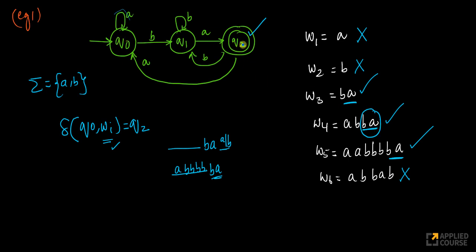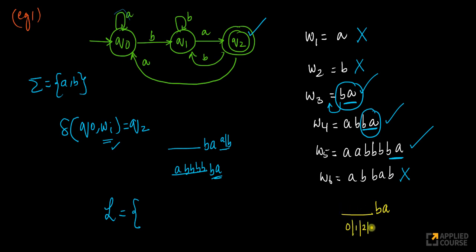For any other ending of the string, it won't be accepted. The smallest string this accepts is 'ba'. Before 'ba', as a prefix, if you have anything else, it will still accept it. The language accepted by this is: anything followed by 'ba'. This 'anything' can be of zero length, one, two, or more — it's represented using a star. Star basically means zero or more repetitions of everything in the alphabet. So this language is Σ*ba, meaning zero or more symbols followed by 'ba'.